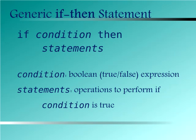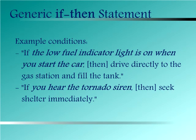In programming, the generic name for a simple conditional statement is the if-then statement. Without focusing on any single programming language, the general structure of the if-then statement is shown here. Condition is a Boolean expression, in other words, one which is either true or false. In the examples just given, the conditions were, the low fuel indicator light is on when you start the car, and you hear the tornado siren. Each of these is either true or false at the relevant moments in time. The statements following then are the operations to be performed if the condition is true. Note that neither example actually includes the word then, but both of them have an implicit then.